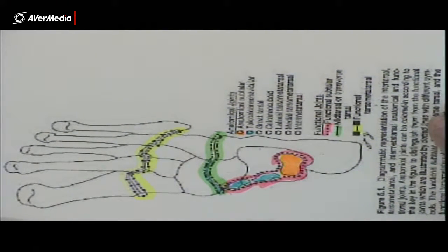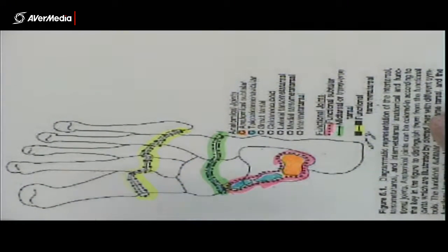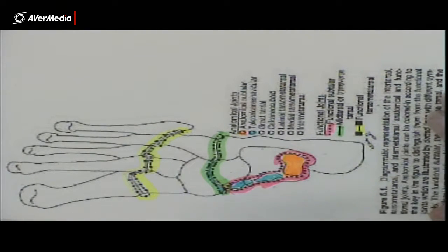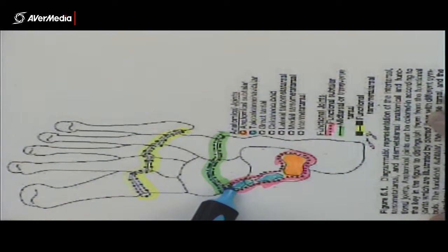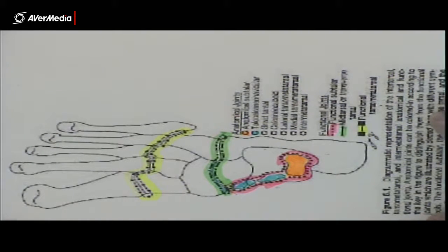That's the talo navicular part of the talo calcaneo navicular joint. So it makes up the medial half of the transverse tarsal joint. So the talo calcaneo navicular joint is about half of the functional subtalar and it's about half of the functional transverse tarsal.